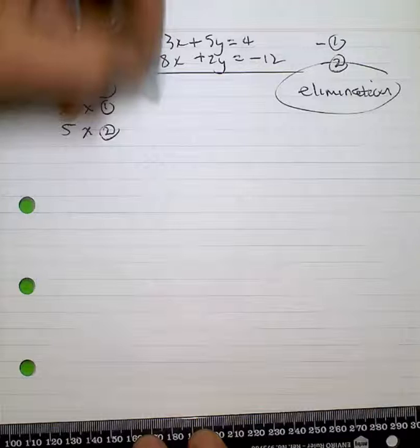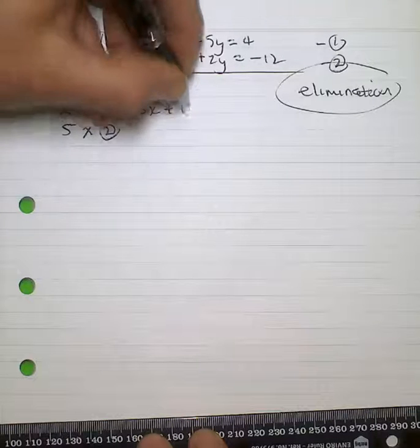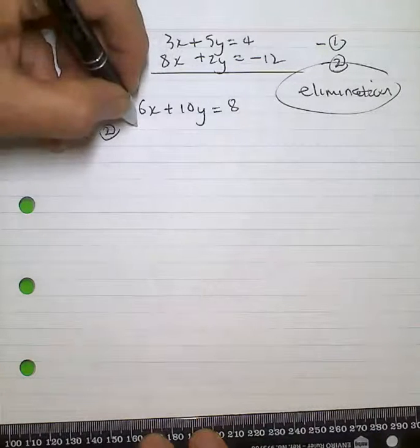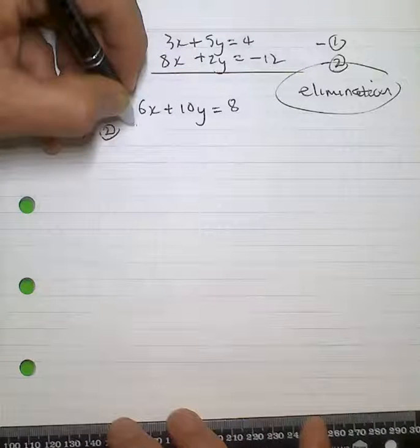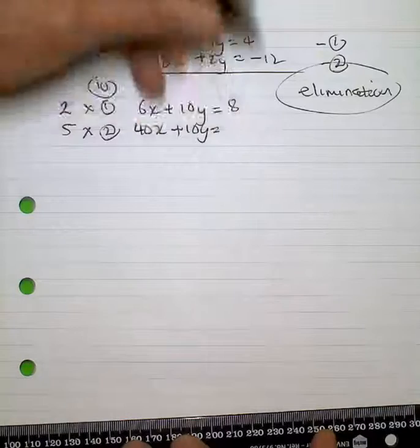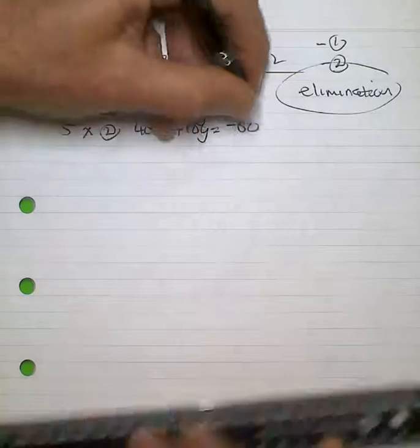Multiplying the first equation by 2 and multiplying the second one by 5, I've got 40x + 10y = -60.